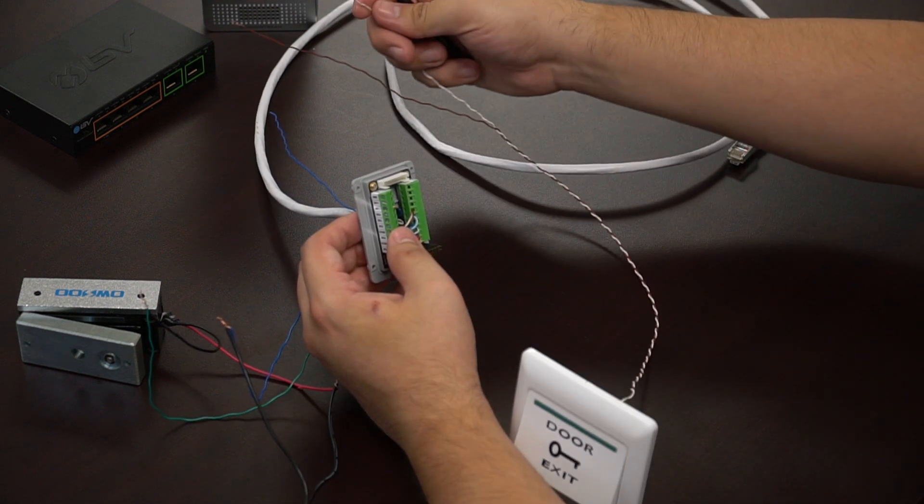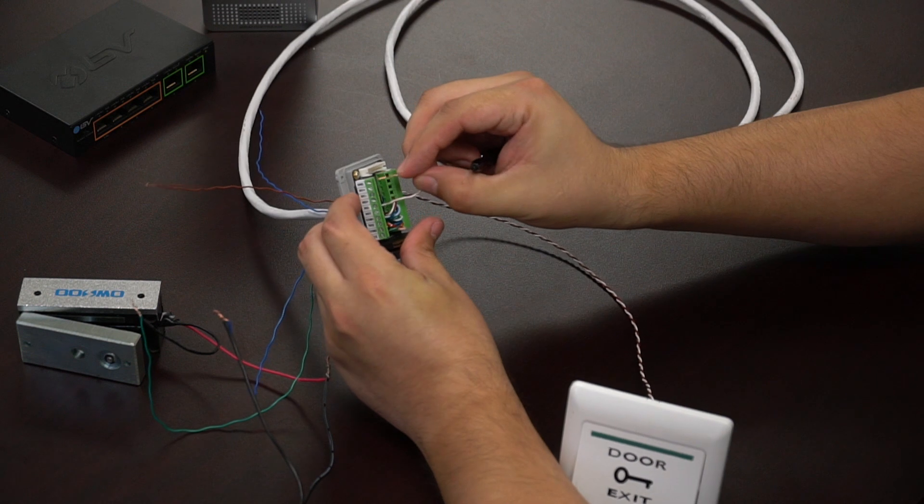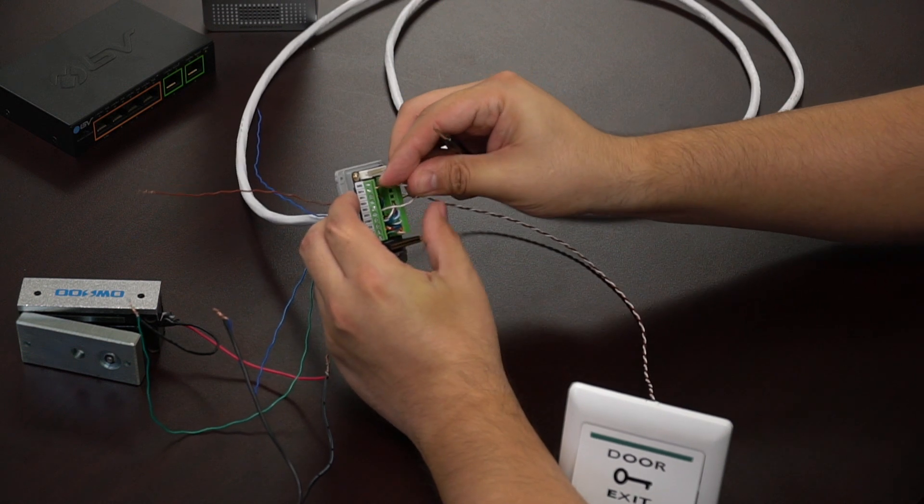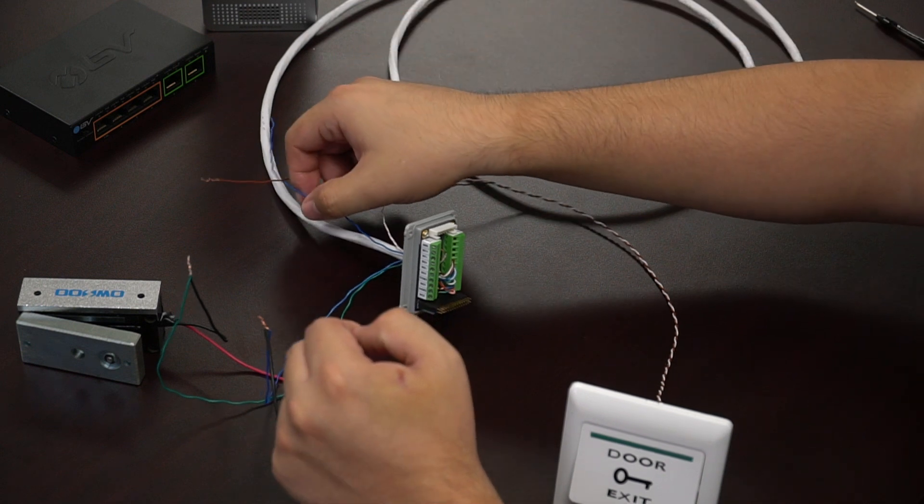And after we get that screwed down, we're going to go ahead and take our switch and thread one of the wires into the GDS punch block. And we're going to be connecting that into the N1 plus.